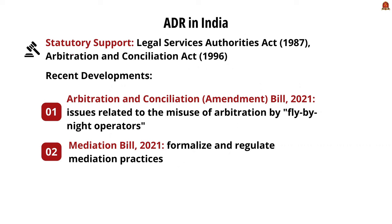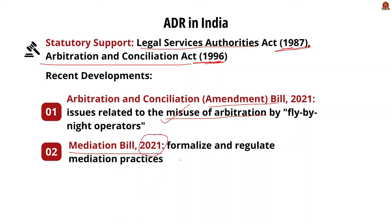Now let us see the status of ADR in India. The Legal Service Authorities Act, implemented in 1987, and the Arbitration and Conciliation Act in 1996 provide a legal framework for ADR mechanism in India. The Arbitration and Conciliation Amendment Bill was introduced in 2021 to address issues related to misuse of arbitration, aiming to enhance credibility and efficiency by introducing stricter rules, checks and balances. The Mediation Bill, also introduced in 2021, aims to formalize and regulate the mediation process, including accreditation of mediators and establishment of a mediation council to oversee and standardize mediation practices.